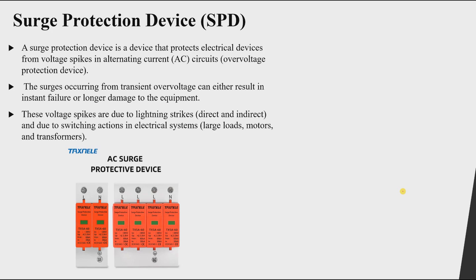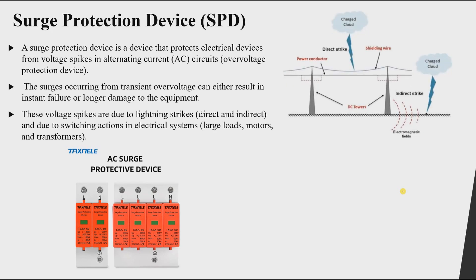For lightning strikes, there are two types: direct strike and indirect strike. If the lightning strike hits the transmission line directly, it is called a direct strike. When it hits the transmission line directly, it increases the voltage of the line — for example, instead of a normal 220V phase voltage, it can go to thousands of volts.